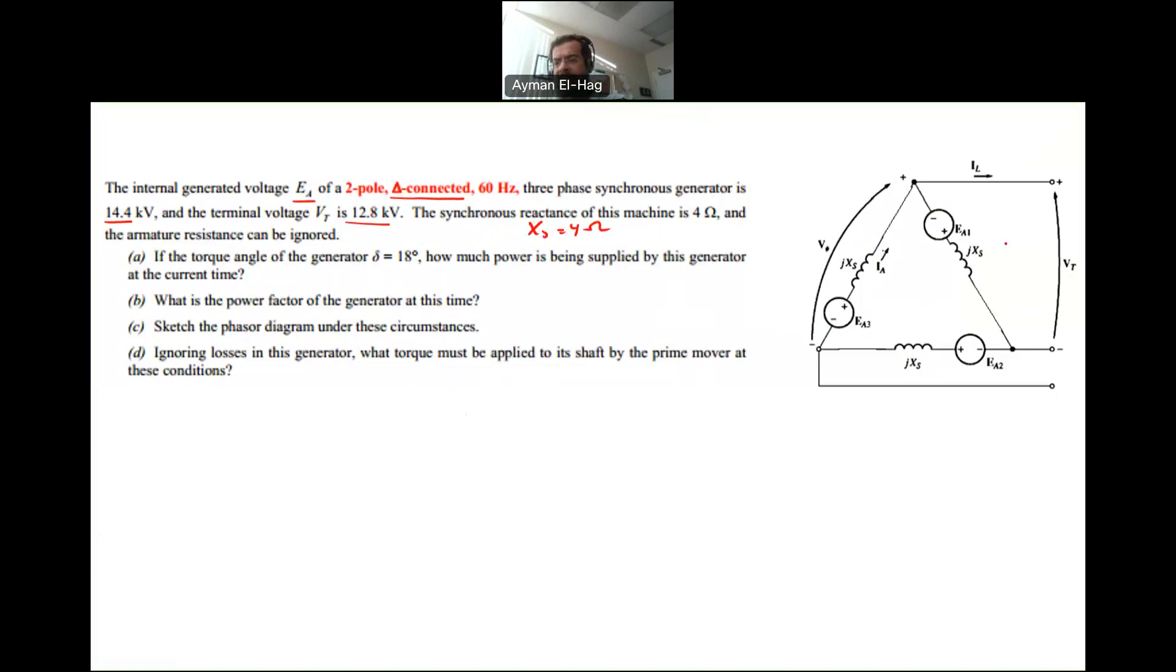So as you can see here, there is no Ra. Ra is ignored. First, if the torque angle is given to us, what is the power that's supplied by the generator?